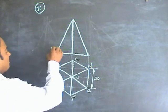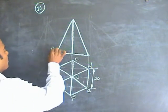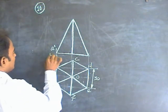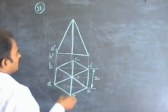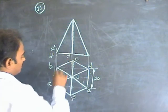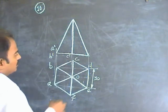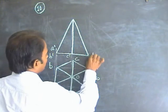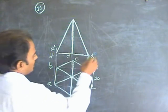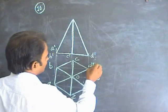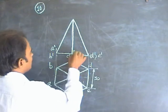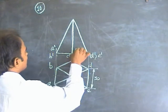Name the corresponding points here. A dash is visible. B dash is invisible. C dash is invisible. D dash is visible. E dash is visible. F dash is visible.